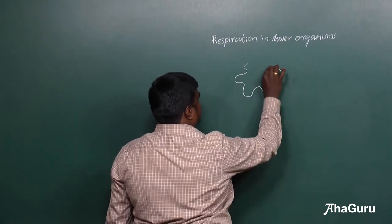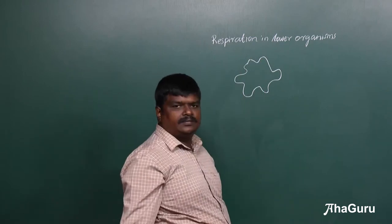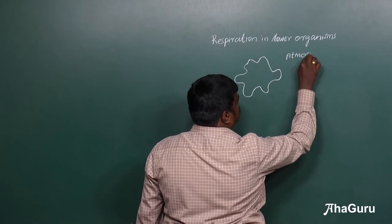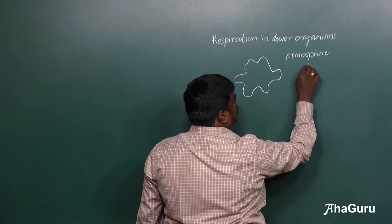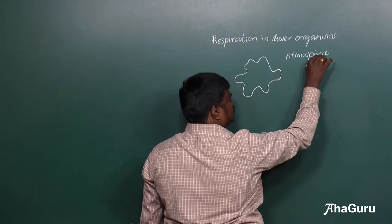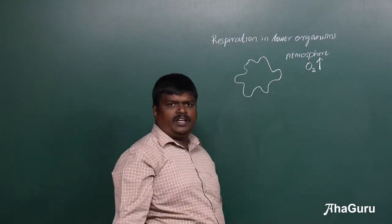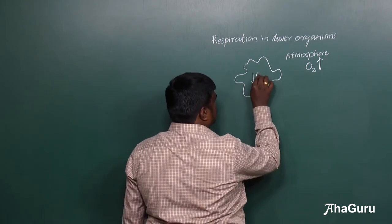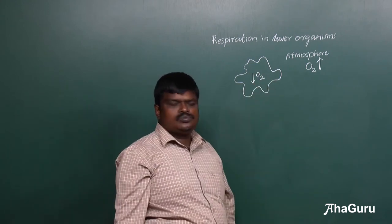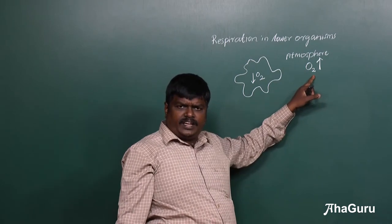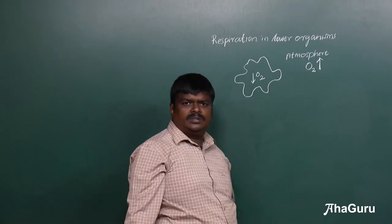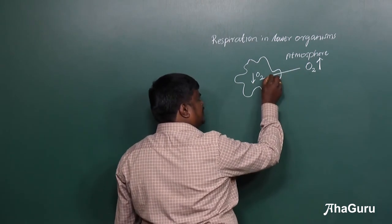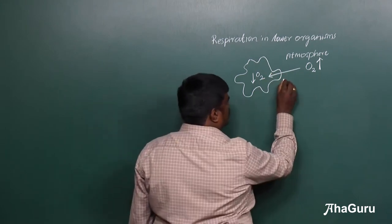In the atmosphere, the oxygen concentration is higher, whereas inside the organism the oxygen concentration is low. So what will happen? The oxygen will move inside by a process called diffusion.